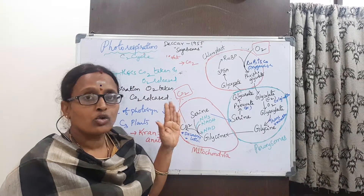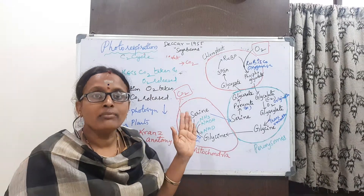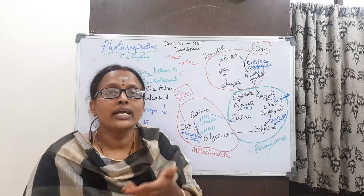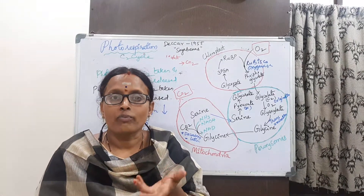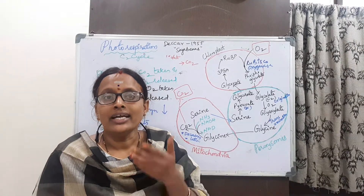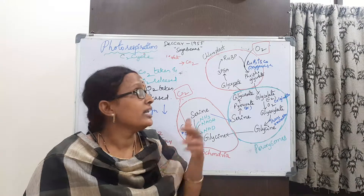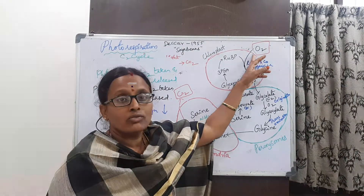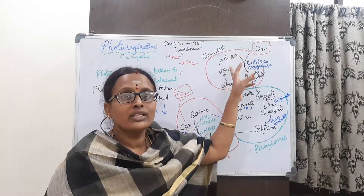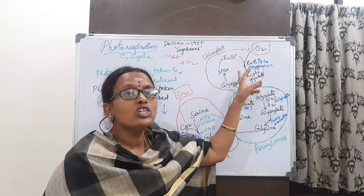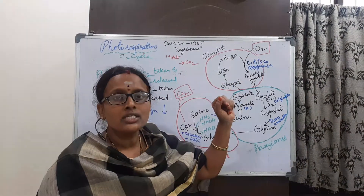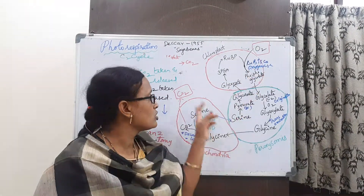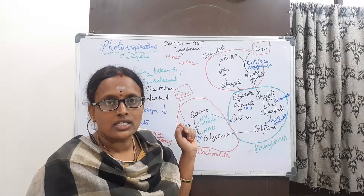In this process, Rubisco enzyme, instead of acting as a carboxylase binding with carbon dioxide, binds with oxygen because oxygen concentration is high. And in this process, we are getting carbon dioxide released.